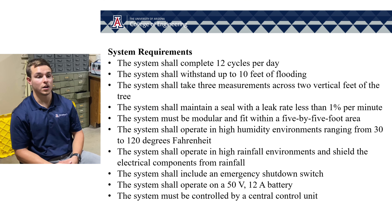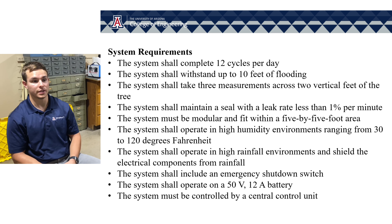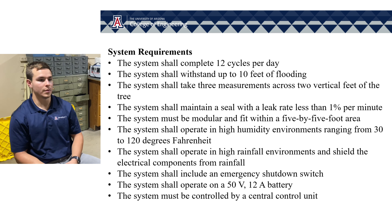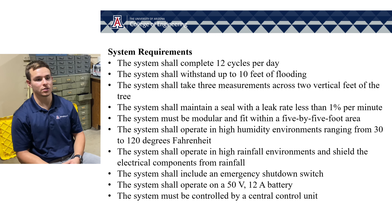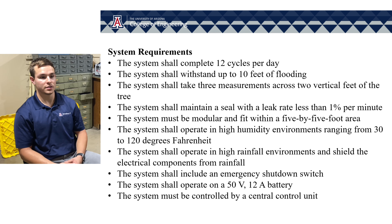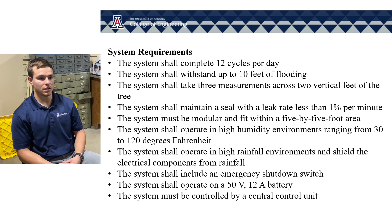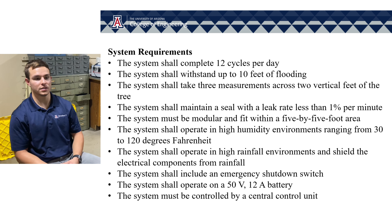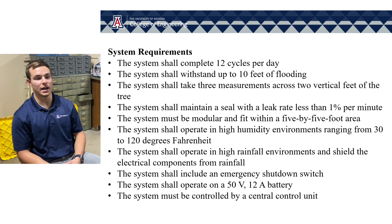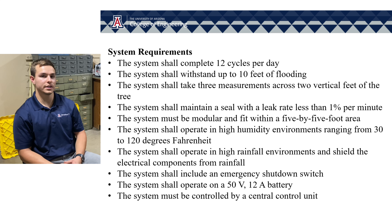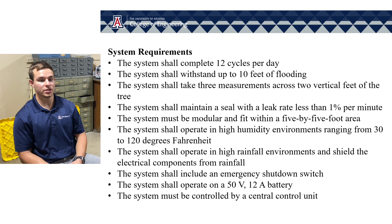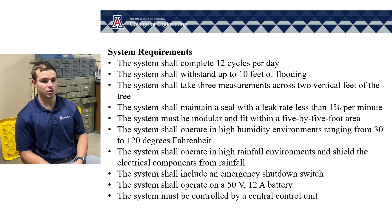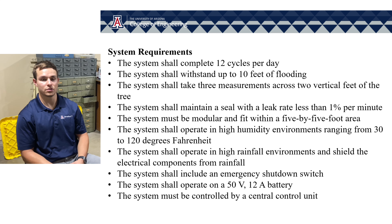Our project must satisfy the following system requirements. It must complete 12 cycles per day, about one per two hours. It must withstand 10 feet of flooding due to high seasonal flooding variability in the Amazon and in the biome. It must take three measurements across two vertical feet of the tree. It must maintain a seal with a leak rate of less than 1% per minute. It must fit within a 5x5 foot area. It must operate in a high humidity environment ranging from about 30 to 120 degrees Fahrenheit. It must operate in a high rainfall environment with electrical components housed in a watertight box. It must include an emergency shutdown, operate on a 50 volt 12 amp battery, and all units must be controlled by a central control unit.